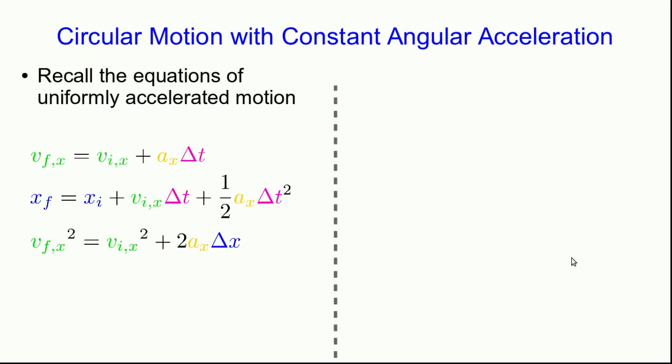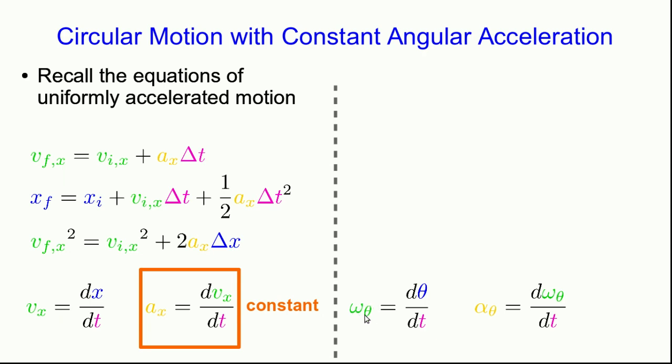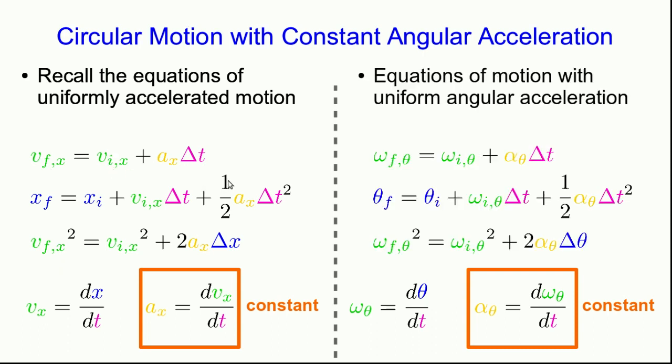I'm going to close up this video by introducing some useful equations. So remember the equations of uniformly accelerated motion way back near the beginning of the course. And these apply for uniform or constant acceleration, where I'll note that there's this relationship between the x component of velocity and the x component of position and the x component of acceleration and the x component of velocity. Well, we have relations exactly like this. We're now talking about an angle and an angular velocity and an angular acceleration. And these are related to each other in exactly the same way. And so if the angular acceleration is constant, it then stands to reason that we'll get a set of equations just like these. And you do. In fact, all you need to do is essentially replace every v with an omega and every a with an alpha and every x with a theta. And you get the equations of motion for motion with uniform angular acceleration.